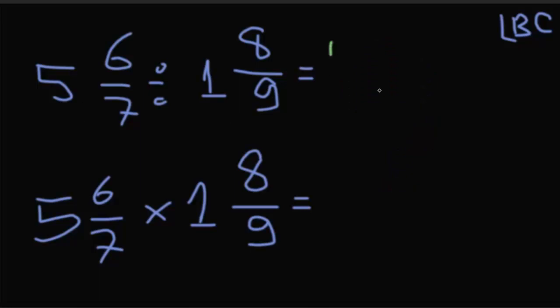You can see 5 times 7 equals 35. 35 plus 6 equals 41. So 41 over 7, we keep the 7.